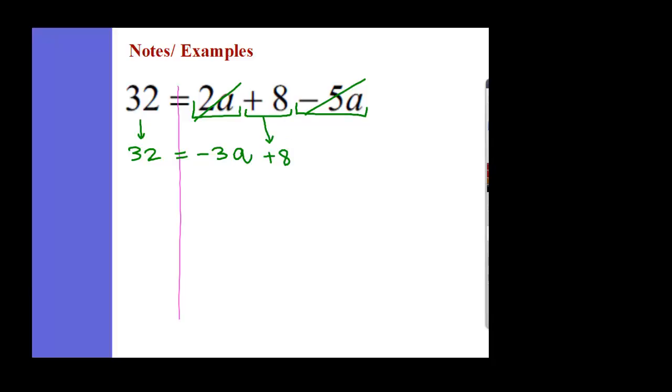Now it's just a two-step equation. Right here we have three terms: 32, negative 3a, positive 8. The 32 is just a constant, 8 is just a constant, which means that you have to move one of them.